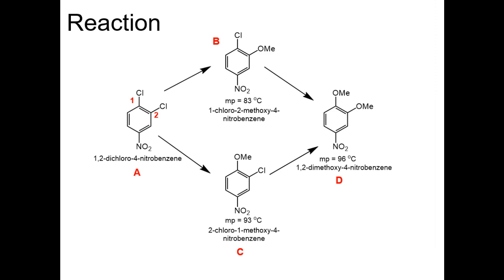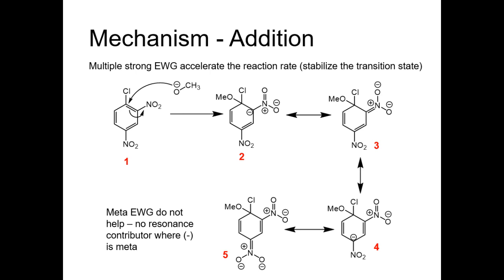A mixture melting point would be necessary to distinguish between C and D. Nucleophilic aromatic substitution is the reaction of aryl halide by the addition and elimination mechanism. This is not an SN1 or SN2 reaction.